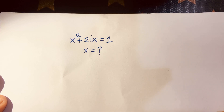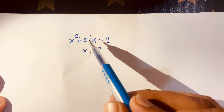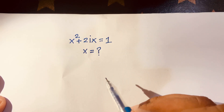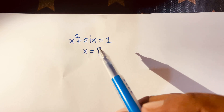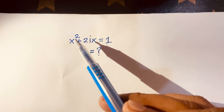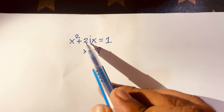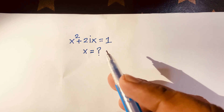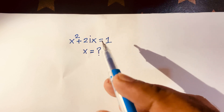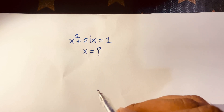Hello everyone. In this video I solve this quadratic equation: x squared plus 2ix is equal to 1. We are finding out the value of x. Here x squared and 1 are the real parts, but 2ix is the imaginary part — it is a complex number. I solve this question using 3 methods.